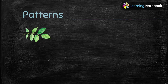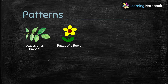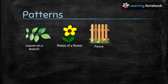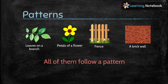To understand patterns, let's take a few examples from our surroundings. First, look at the leaves on a branch. Second, look at the patterns of a flower. Third, look at the fence around your house. Fourth, look at the bricks arranged in a wall. All these follow a certain pattern. So what is a pattern? A pattern is a repeated arrangement of shapes, numbers, colors, and so on.